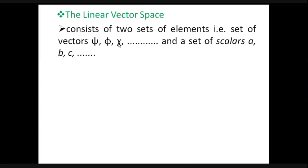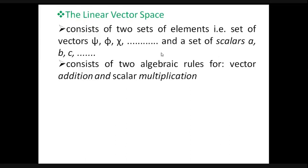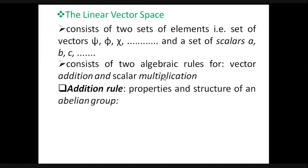The first is a set of vectors — psi, phi, and many more up to the nth element. The second is a set of scalars — a, b, c, up to nth scalar. These sets of vectors and scalars can be manipulated using algebraic rules like vector addition or scalar multiplication, similar to what we do in vector calculus. One must know the properties and structure of the Abelian group — what are the addition rules for those sets of vectors and scalars, which we will discuss here.